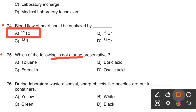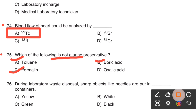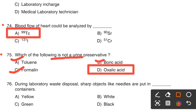Which of the following is not a urine preservative? Toluene, boric acid, and formaline are urine preservatives. So the right answer is Option D, Oxalic acid. Oxalic acid is not a urine preservative.